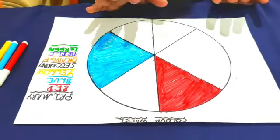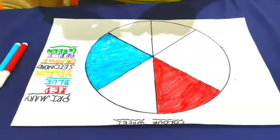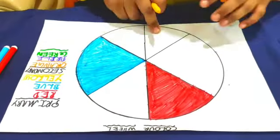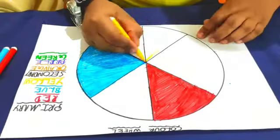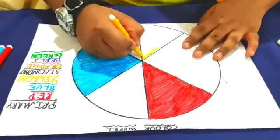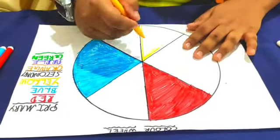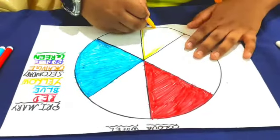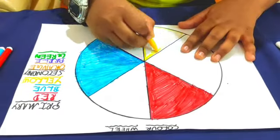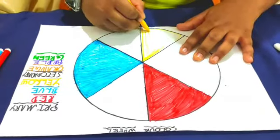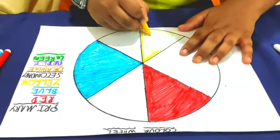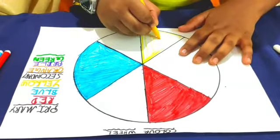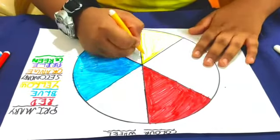Now the last primary color is yellow. And here I am coloring it. The easy way of doing it is draw the same pattern like this and fill it up inside.